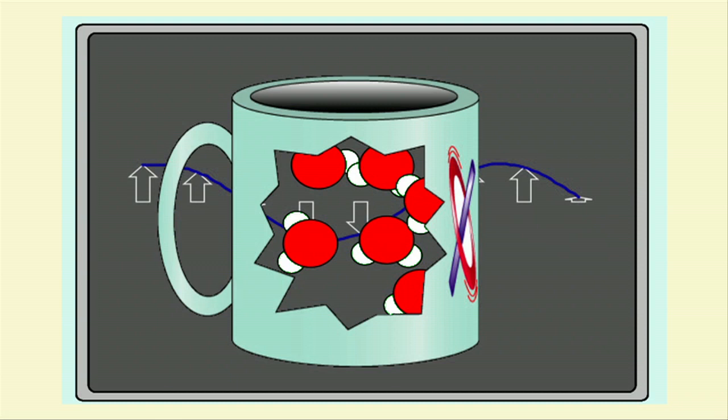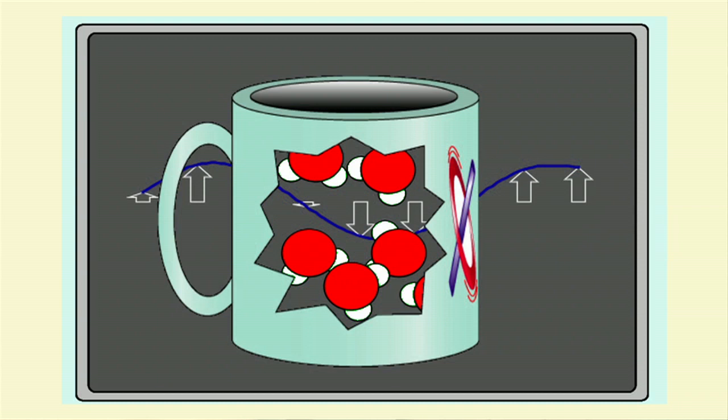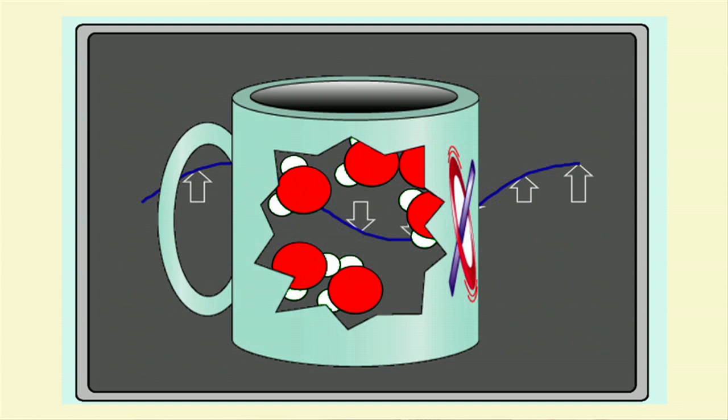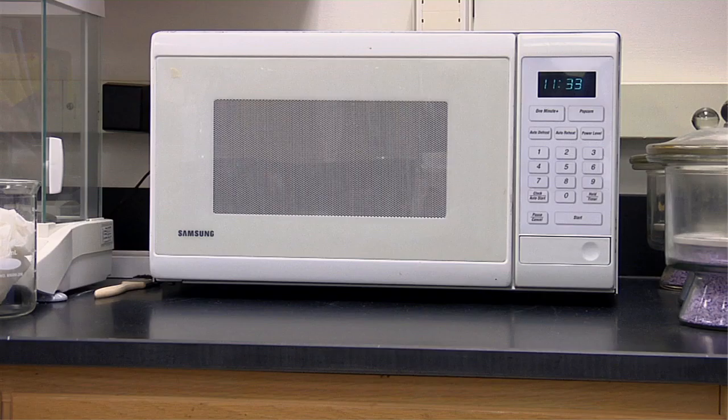Here we have a very useful simulation that shows how microwave radiation interacts with water molecules. We can see that the oscillating electromagnetic field excites the rotation of the water molecules. Those water molecules collide with their neighbors and turn that rotational energy into translational energy or motion. And that is thermal energy — we can see how the temperature of the system goes up.